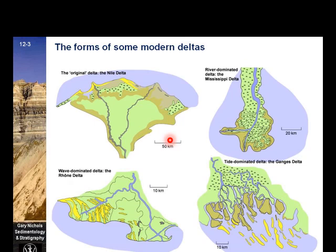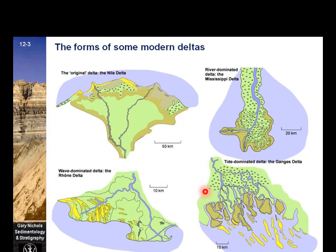Deltas are typically classified according to the main control on their position, which is a combination of river, wave, and tidal processes depending on the strength of each. The other two factors that play a major role are landscape position and the grain size distribution of the source sediment entering the delta from the river. The types of delta are river-dominated delta, such as the Mississippi delta in the USA; wave-dominated delta, such as the Rhone delta in France; and tide-dominated delta, such as the Ganges delta in West Bengal, India.